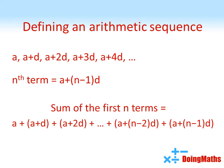So if we were going to sum the first n terms, it would look like this. We'd have a plus a plus d plus a plus 2d all the way up to a plus n minus 1d. But that would take a long time, so we're going to see if we can create a shorter formula for working this out.